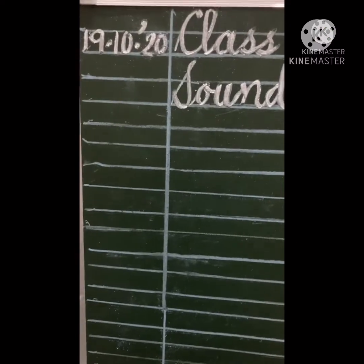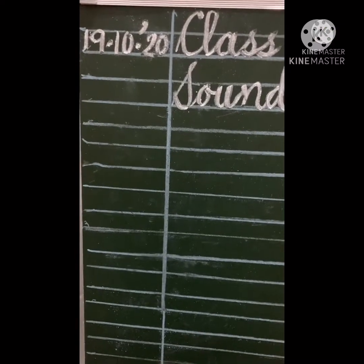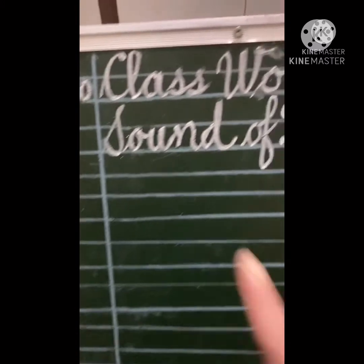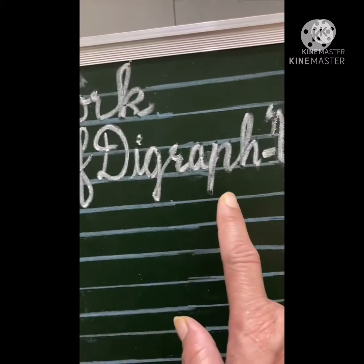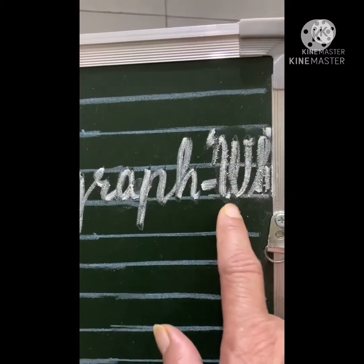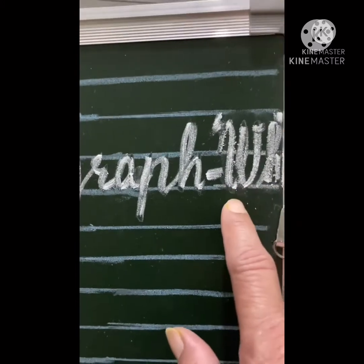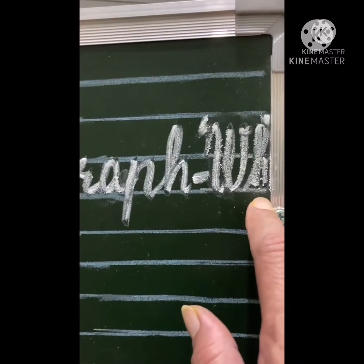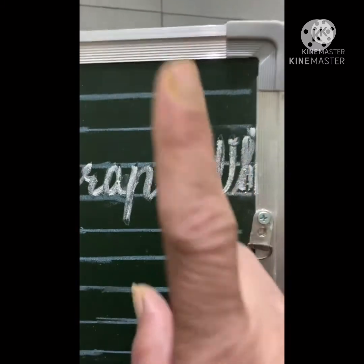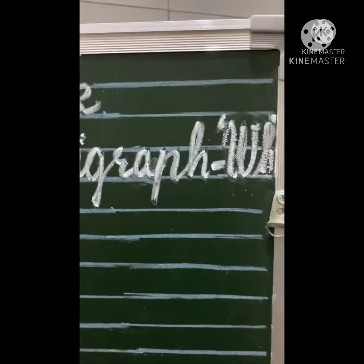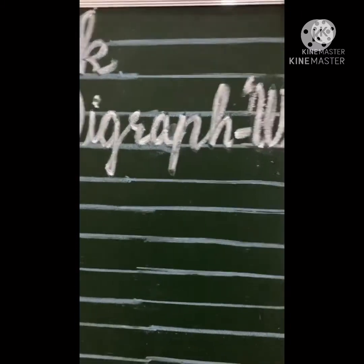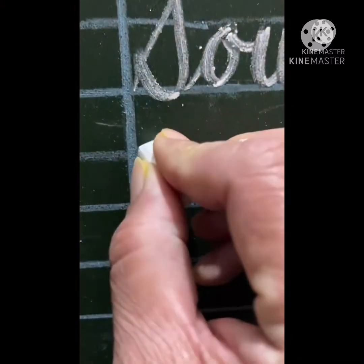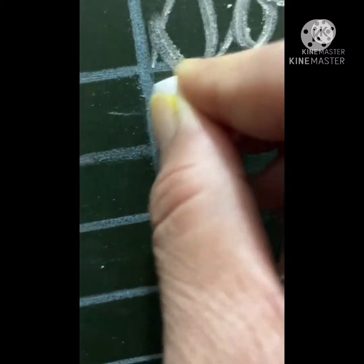Hello kids, welcome back for another session of English learning. Today we are going to take up the sound of digraph. The next one is WH — W gives a 'wh' sound and H gives a 'h' sound, and together they give a single sound: 'wh'.